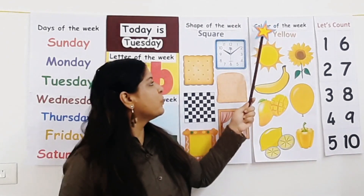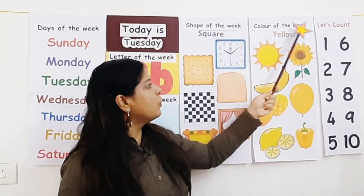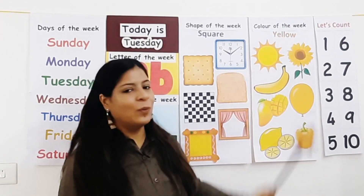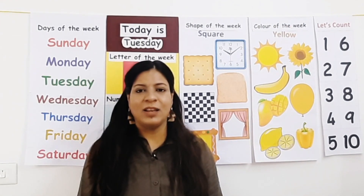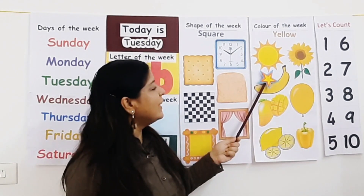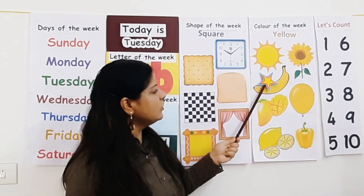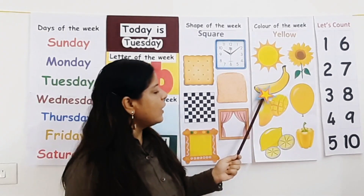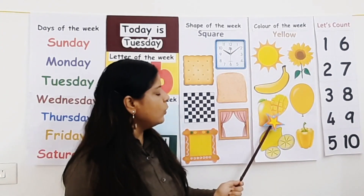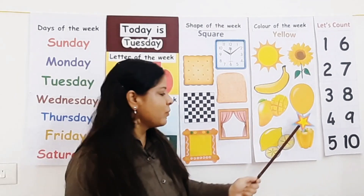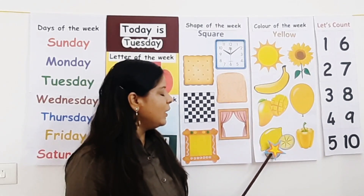Now let's see the color of the week. Color of the week is yellow. Yellow is a primary color, along with blue and red. Now let's see the pictures: yellow sun, yellow sunflower, yellow banana, yellow mango, yellow balloon, yellow lemon.